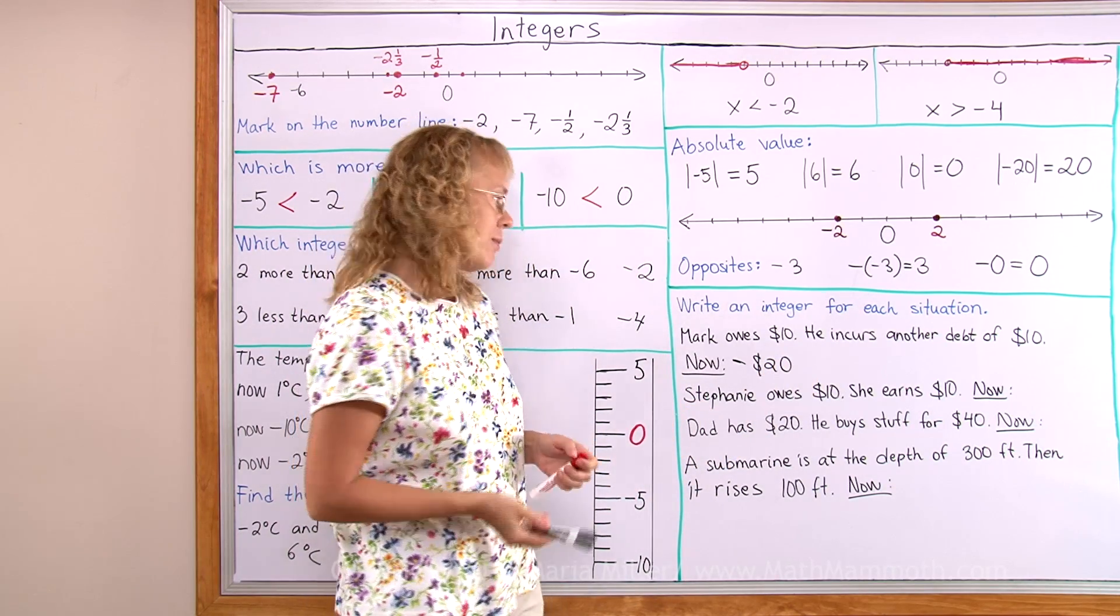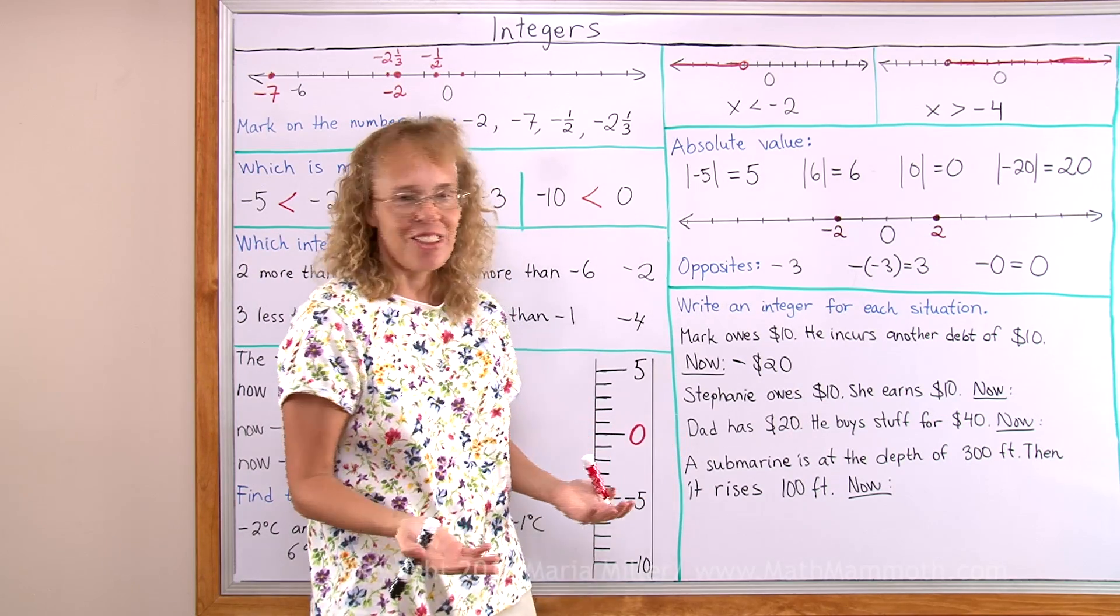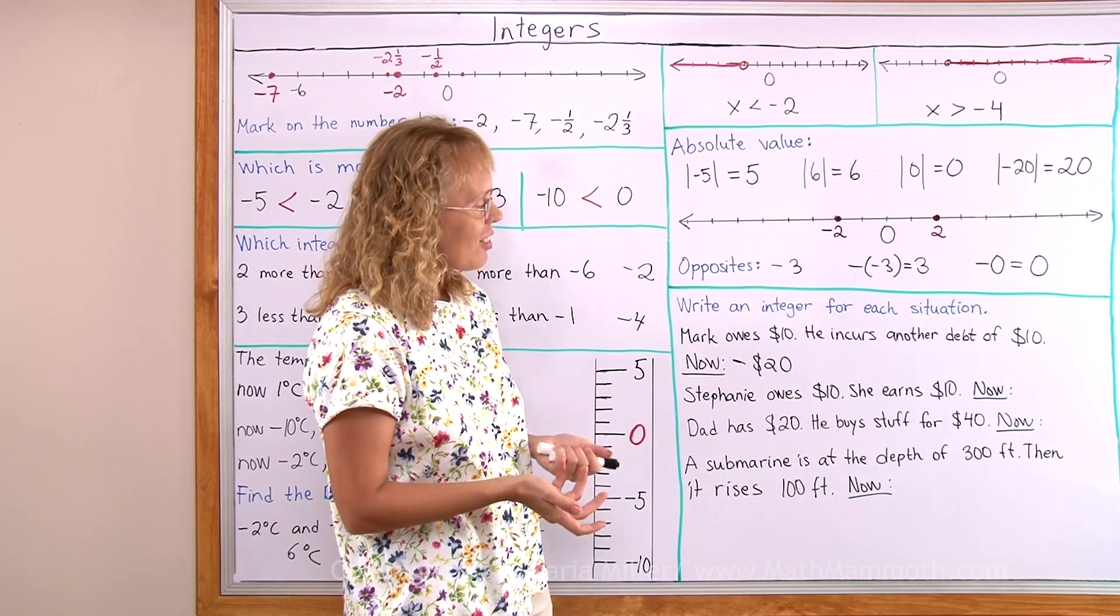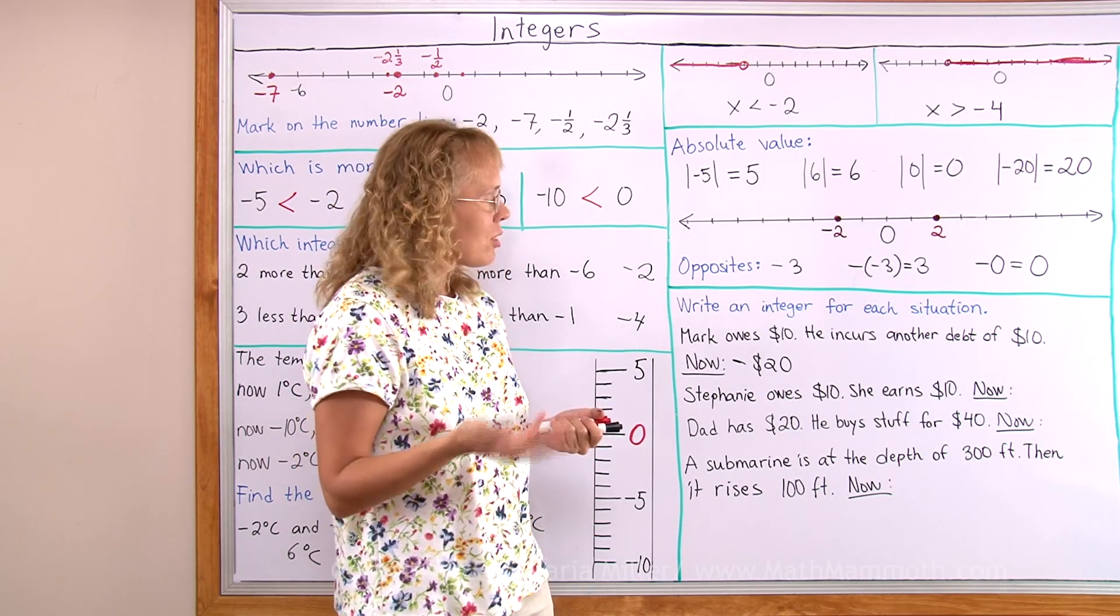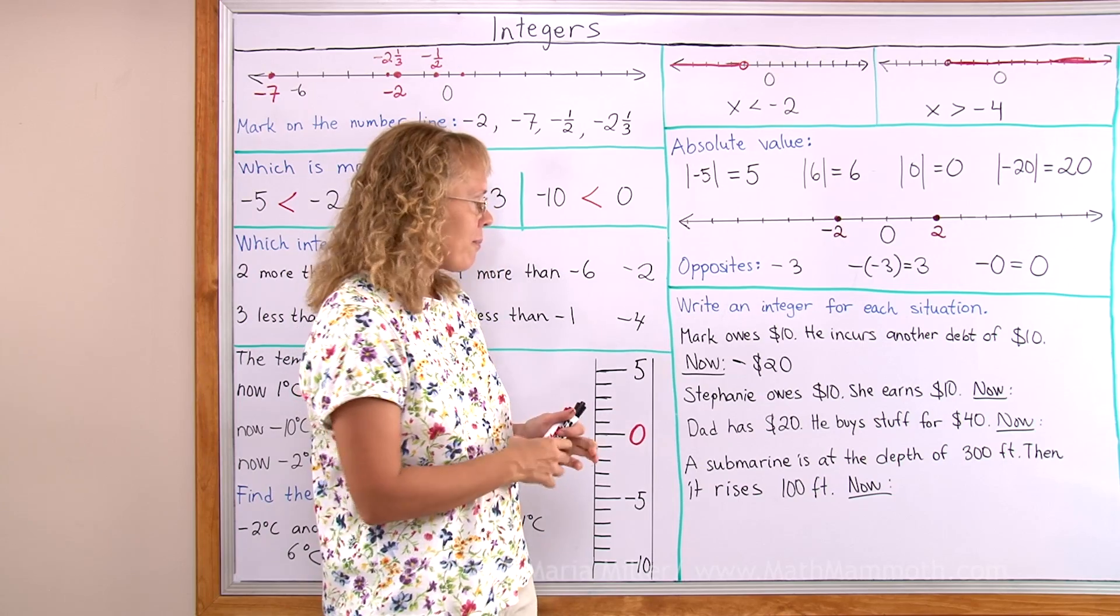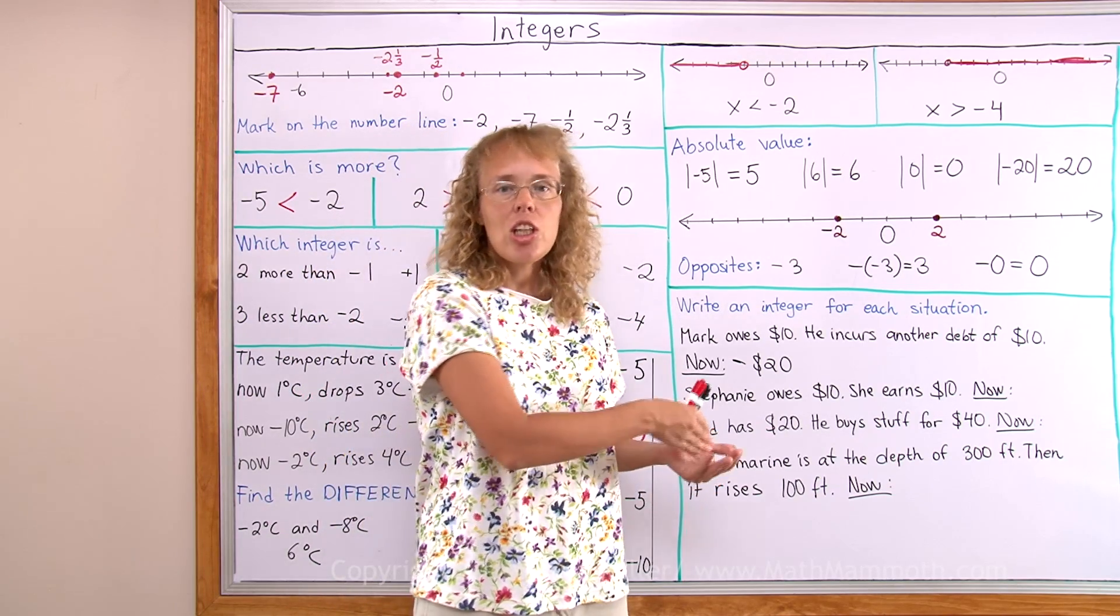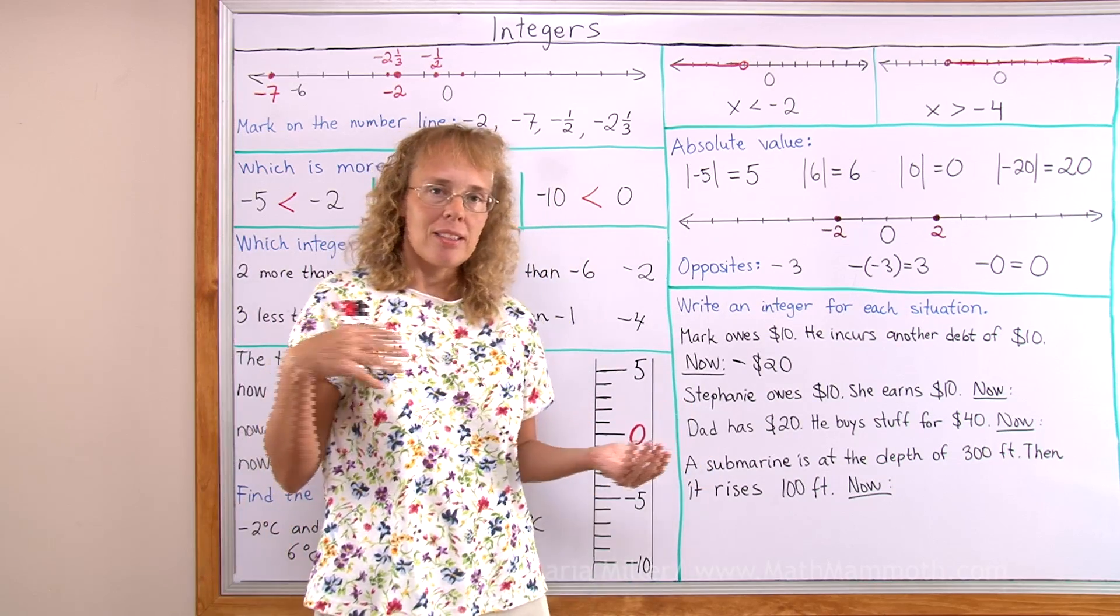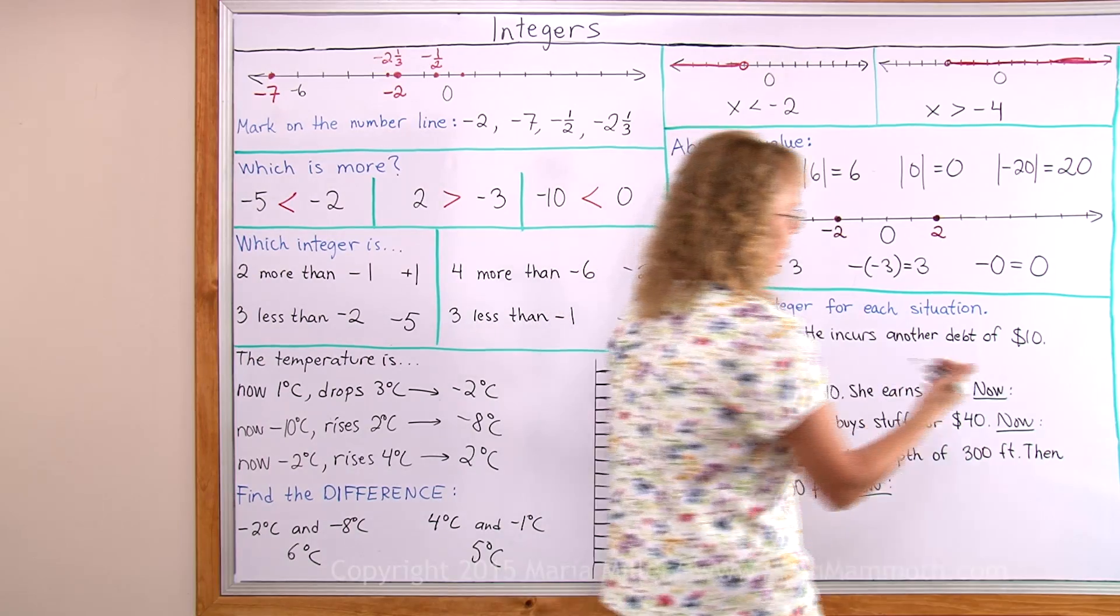Stephanie owes 10 dollars. That's like negative 10. Stephanie has negative 10 dollars. She earns 10 dollars. And now what's her money situation? Let's use a single integer to describe it. She was in the negatives for 10 dollars. She earns 10 dollars. So now that balances. She can now pay her debt and have nothing. So now she has 0.